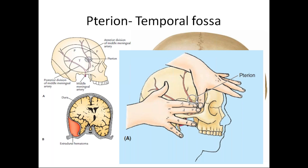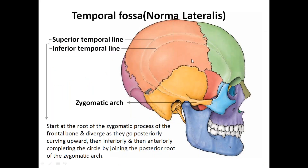Pterion is a very important landmark. If you fall from a height, from a motorbike, or in any accident and are injured in this plane, since the cranium is very thin here, the bone will fracture immediately and there will be tearing of the middle meningeal artery and vein, resulting in extradural hematoma. The meeting point of all the sutures here is called the sylvian point, because the other name for the lateral sulcus is the sylvian sulcus or sylvian fissure — that is why it is called the sylvian point.